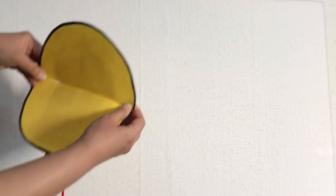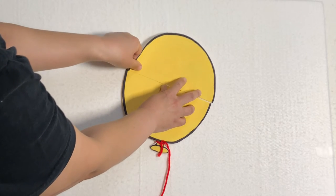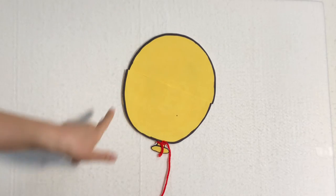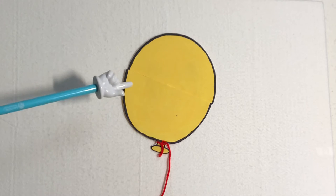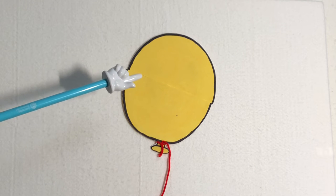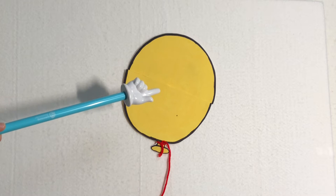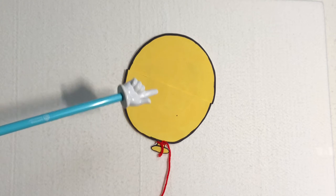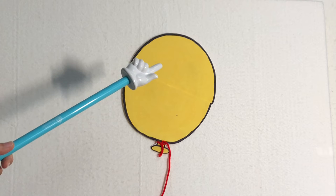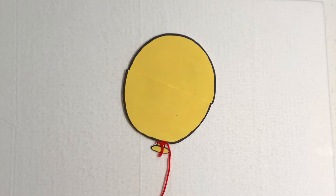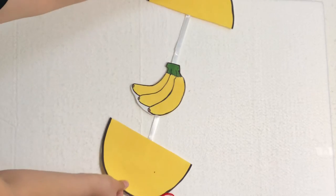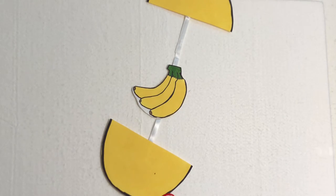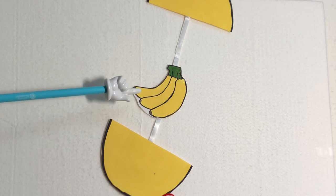The next balloon is this. What color is it? It's yellow. What's gonna come out from this yellow balloon? What is yellow, sweet, and monkeys like it? Let's see what's gonna come out. One, two, three. Yellow banana came out. Yellow.